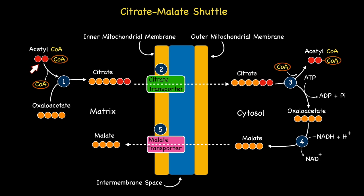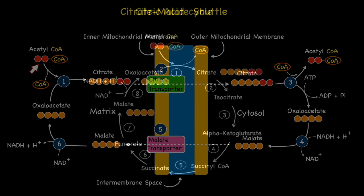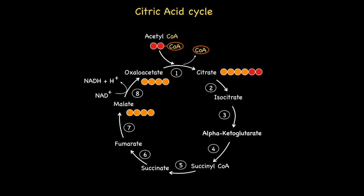Finally, during step number six, malate is oxidized back to oxaloacetate by NAD+, which is subsequently reduced to NADH. For those who may be interested, this happens to also represent the final step of the citric acid cycle.